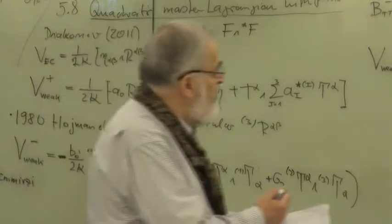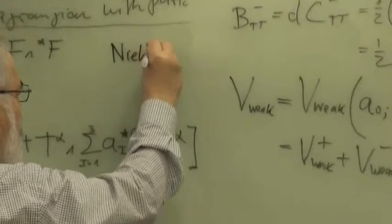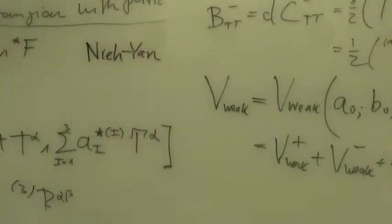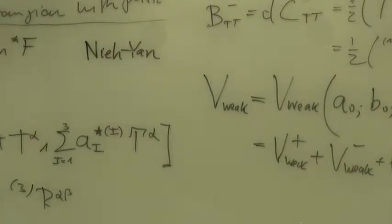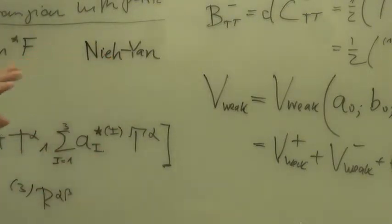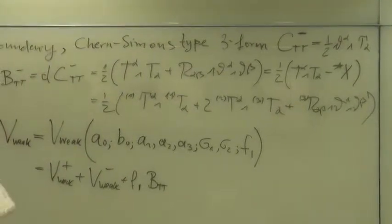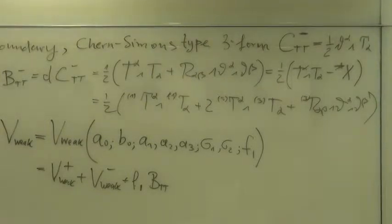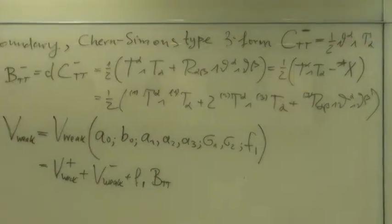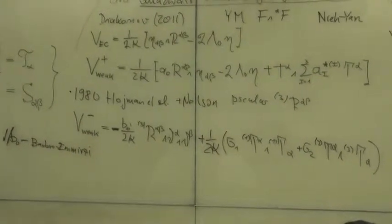I should mention this term was introduced by Nieh and Yan already quite some time ago. Nieh is at Tsinghua University in Beijing, and Yan was one of his students at Stony Brook. They introduced this in 1982 or so. We call this the Nieh-Yan identity — the identity which relates this boundary term to this expression.